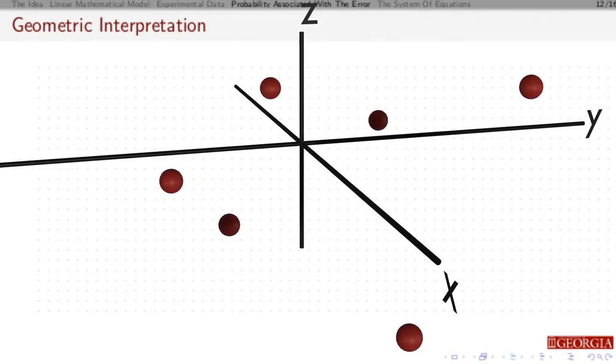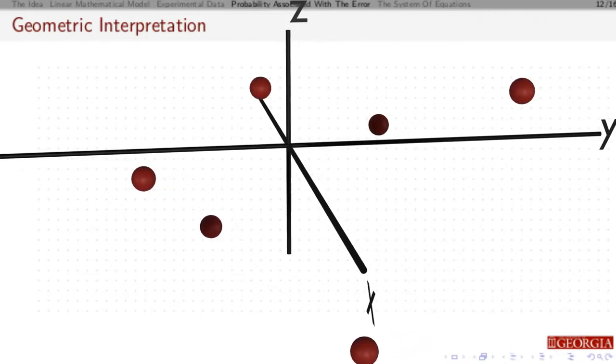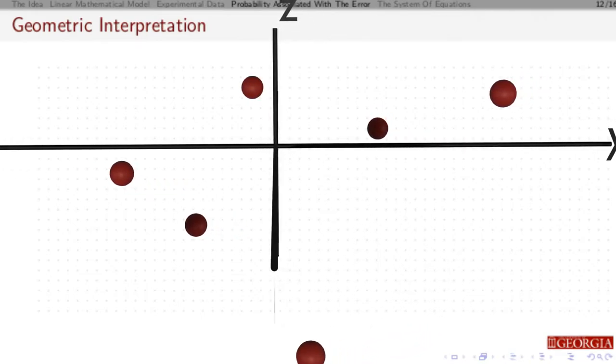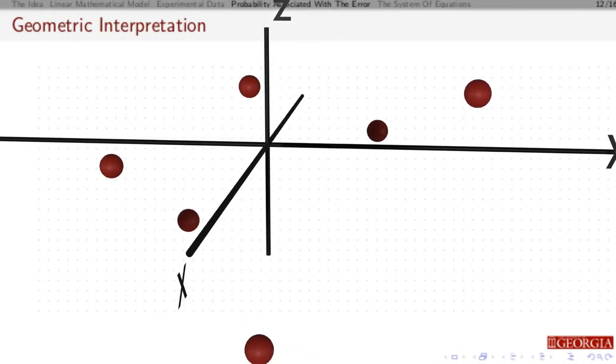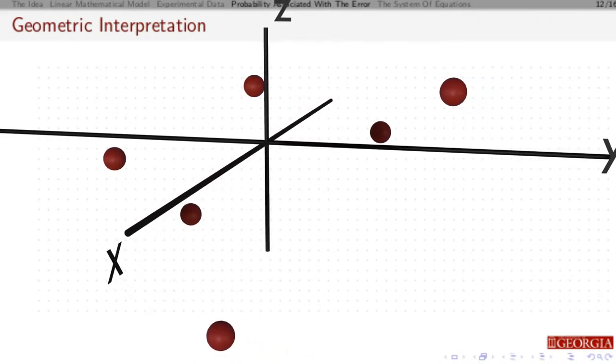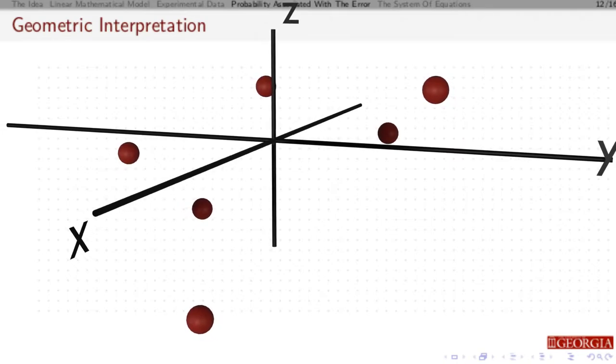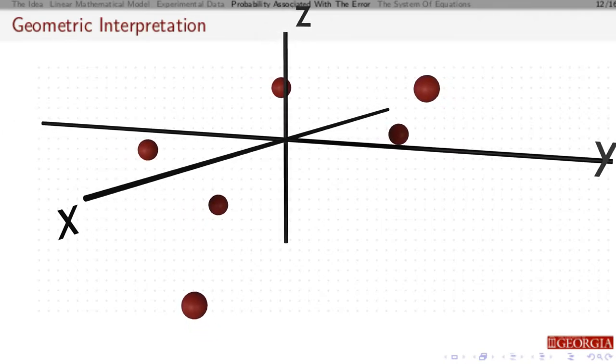So geometrically we can look at this. We have these red dots are these measurements. Each has a coordinate X, Y, and Z. During the experiment you set the X and the Y and then you measure the Z and you can graph these things.